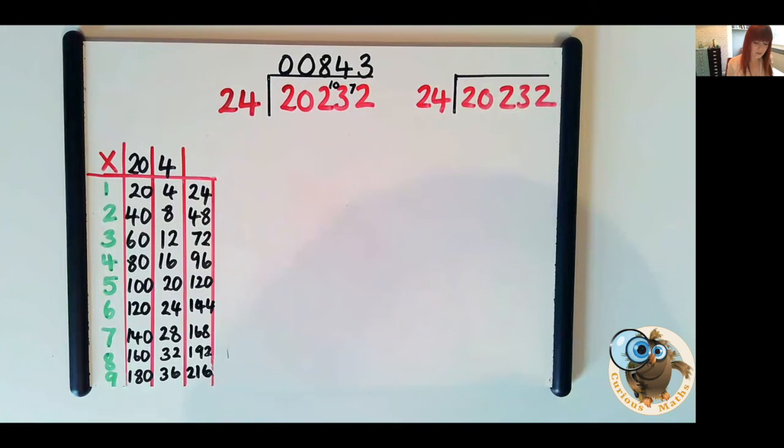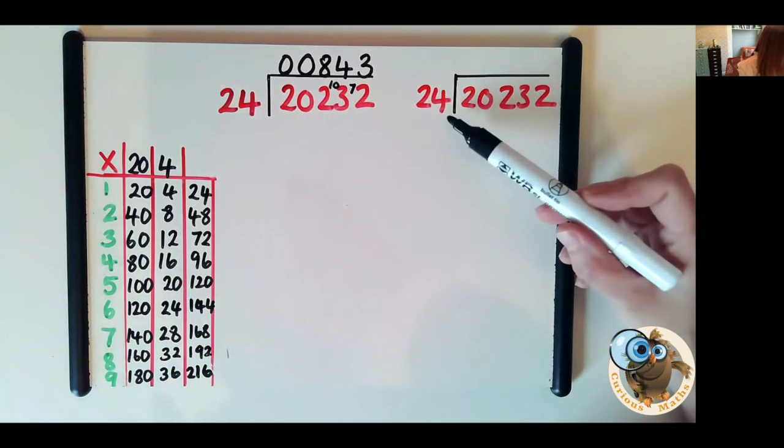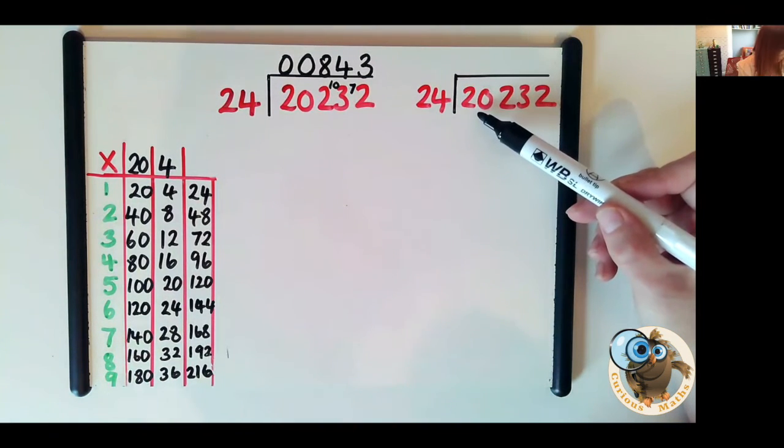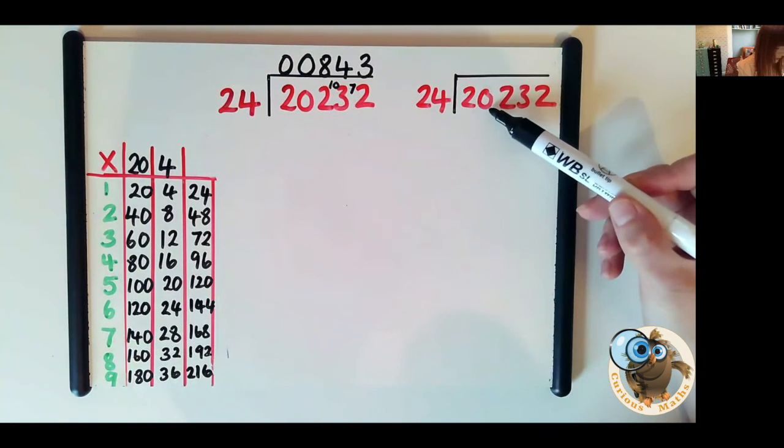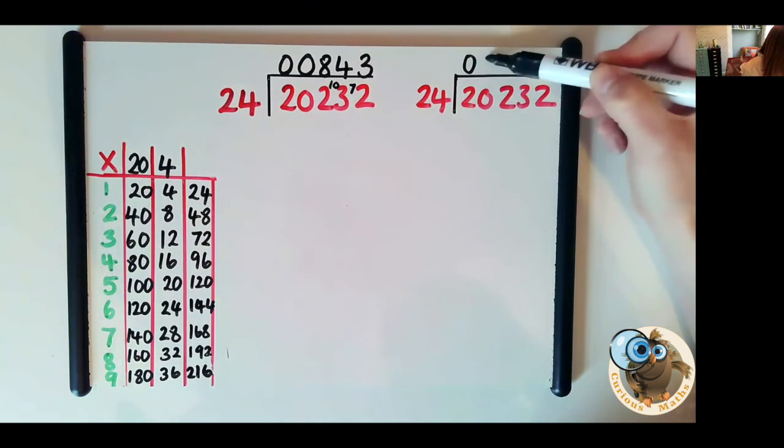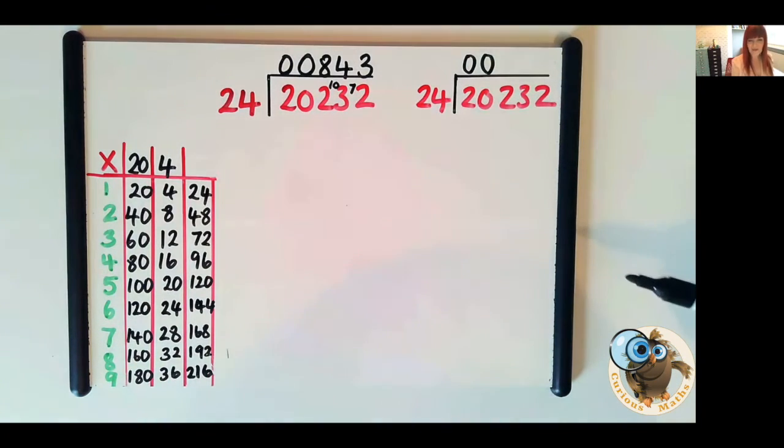Right so just as before I've put the short division method already done. So it might be that you give this question to your child to do first using short division and then draw up the chart and solve it and then they can see if they're going to get exactly the same answer with the long division. So let's have a look. How many 24s in two? Zero. How many 24s in 20? Zero. Now you can write zeros as placeholders there if your child wishes. Perhaps they might do that in school so you might like to mimic that if they do.